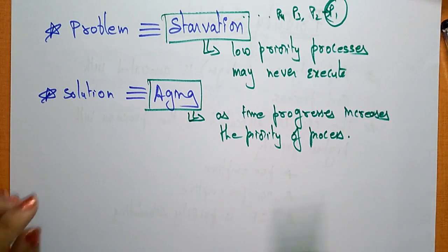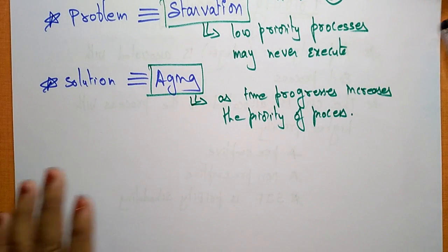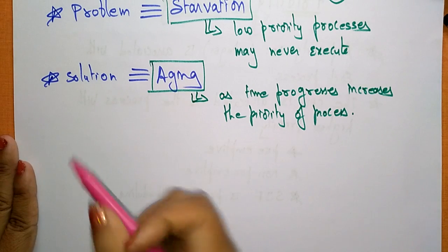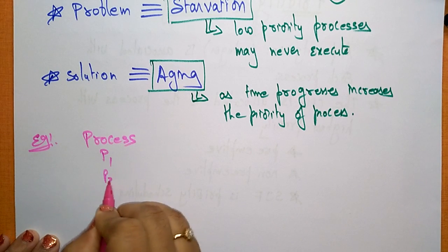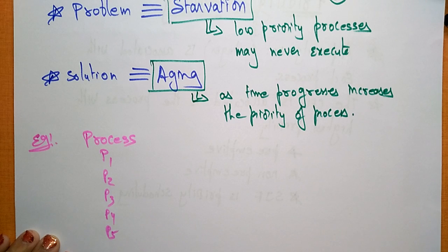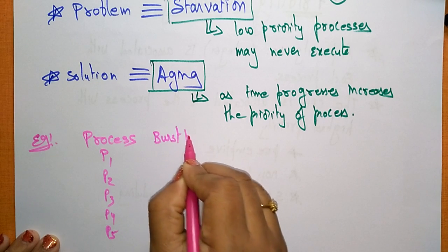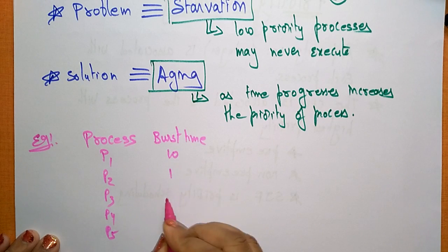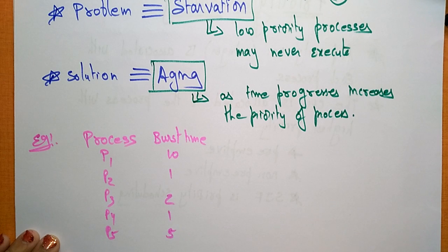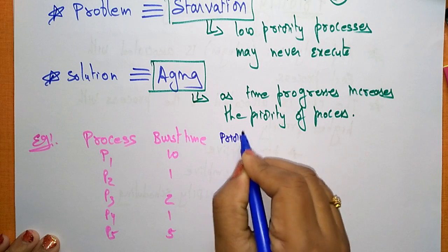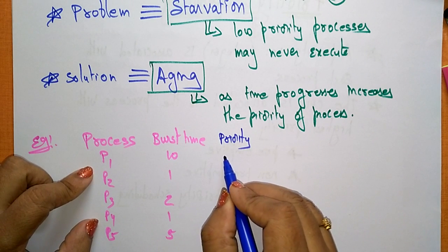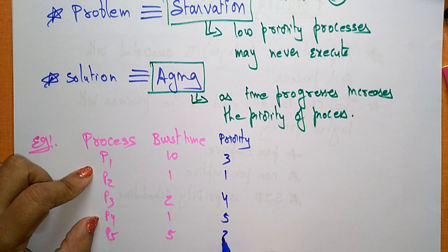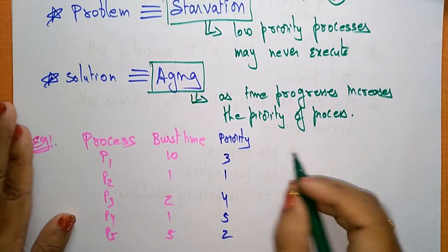Now let us see an example of priority scheduling. We have five processes: P1, P2, P3, P4, and P5. Their burst times are 10, 1, 2, 1, and 5 respectively. Their assigned priorities are 3, 1, 4, 5, and 2. When using priority scheduling, the CPU picks the process with the smallest integer priority first.